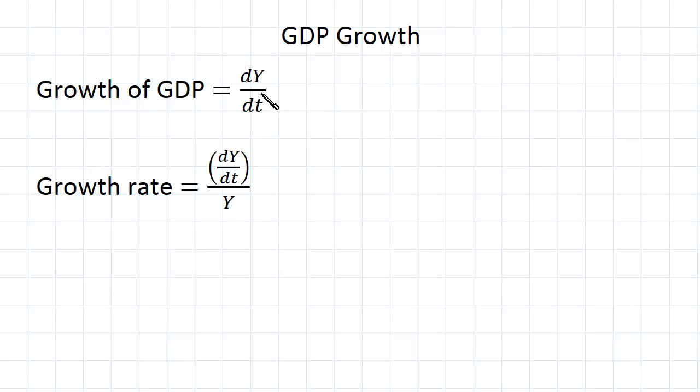So this is continuous growth. If we were looking at it in a discrete manner, then this would be the same as y at time t minus y at time t minus 1.